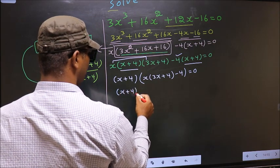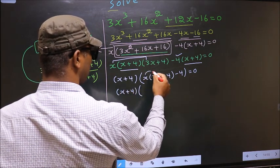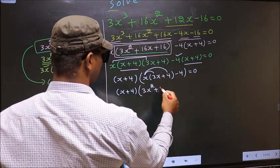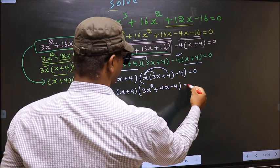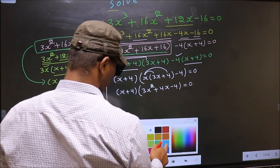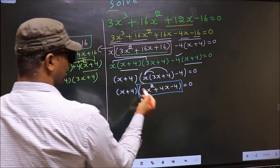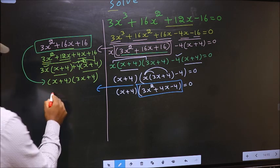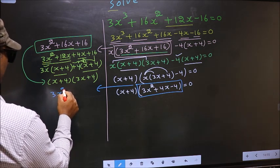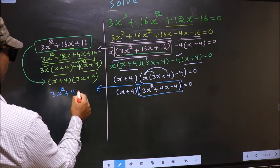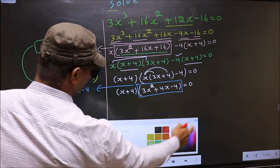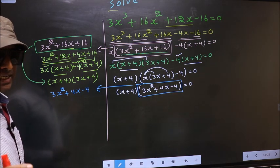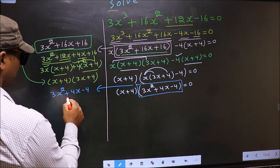Now x plus 4 — here you open up the brackets. You get 3x squared plus 4x minus 4, equal to 0. Now we got another quadratic. I will factorize the quadratic: 3x squared plus 4x minus 4.